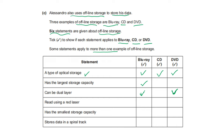Read using red laser light — CD and DVD can be read using red laser light. Has the smallest storage capacity — only CD. Stores data in a spiral track — all three, Blu-ray, CD, and DVD, store data in a spiral track.